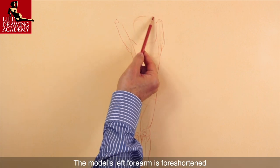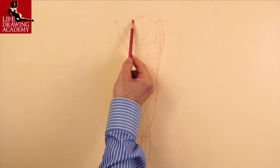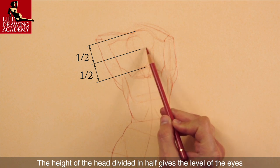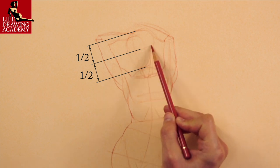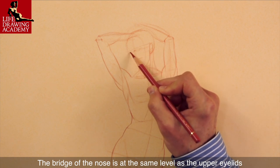The model's left forearm is foreshortened and therefore appears slightly shorter than the height of the head. The height of the head divided in half gives the level of the eyes. The bridge of the nose is at the same level as the upper eyelids.